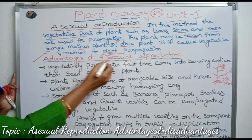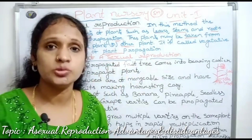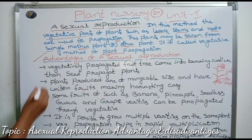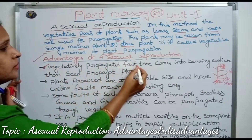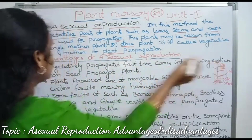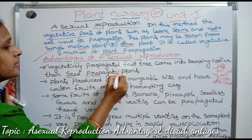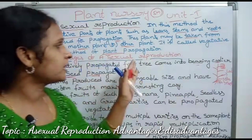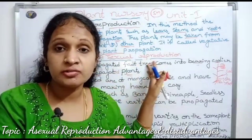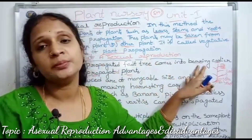Next, let us see the advantages of asexual reproduction. The first advantage: vegetatively propagated fruit trees come into bearing earlier than seed-propagated plants.